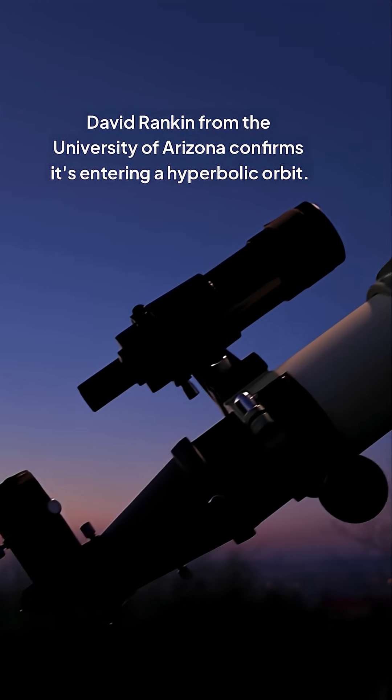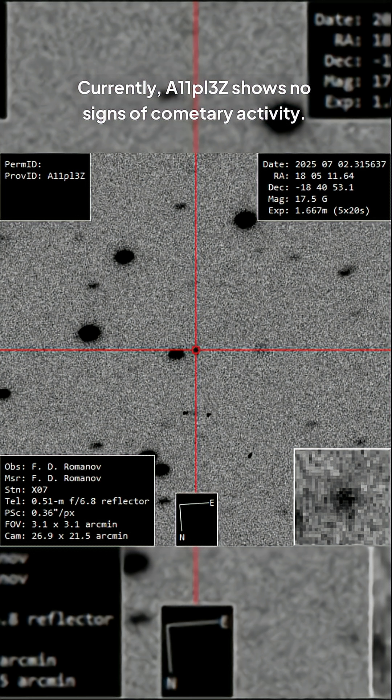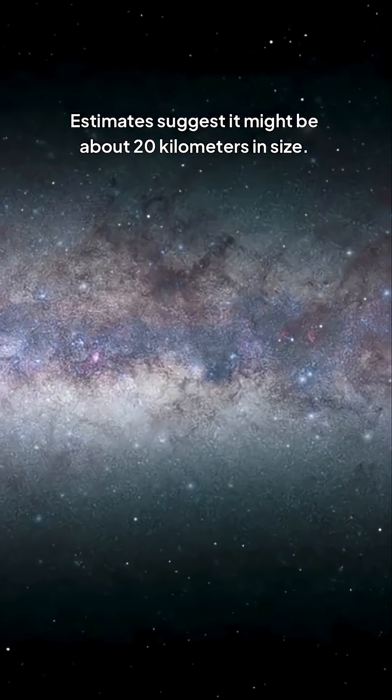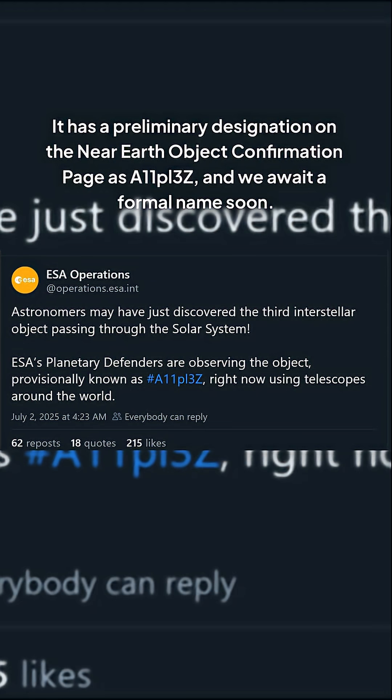David Rankin from the University of Arizona confirms it's entering a hyperbolic orbit. Currently, A11PL3Z shows no signs of cometary activity. Estimates suggest it might be about 20 kilometers in size. It has a preliminary designation on the Near Earth Object Confirmation page as A11PL3Z, and we await a formal name soon.